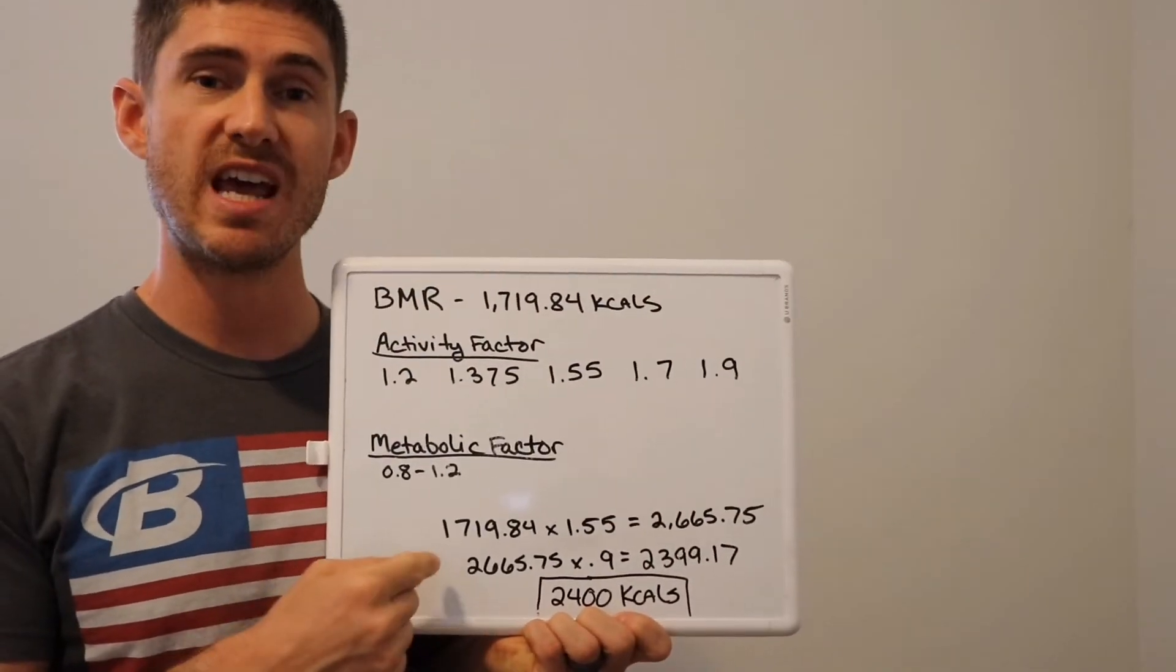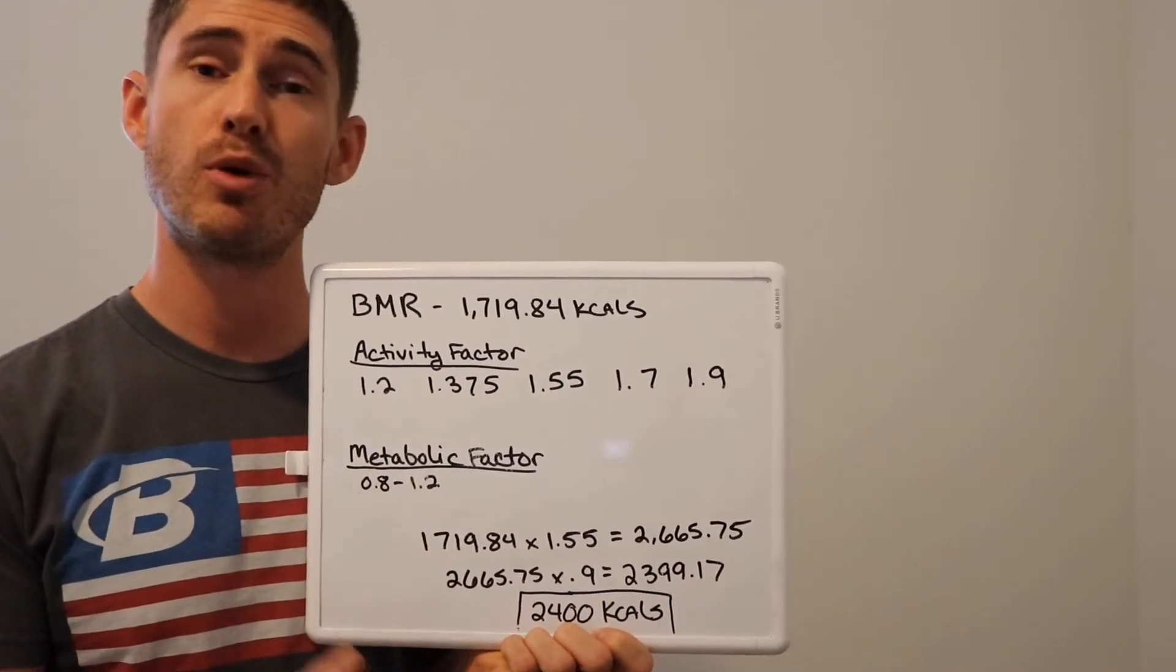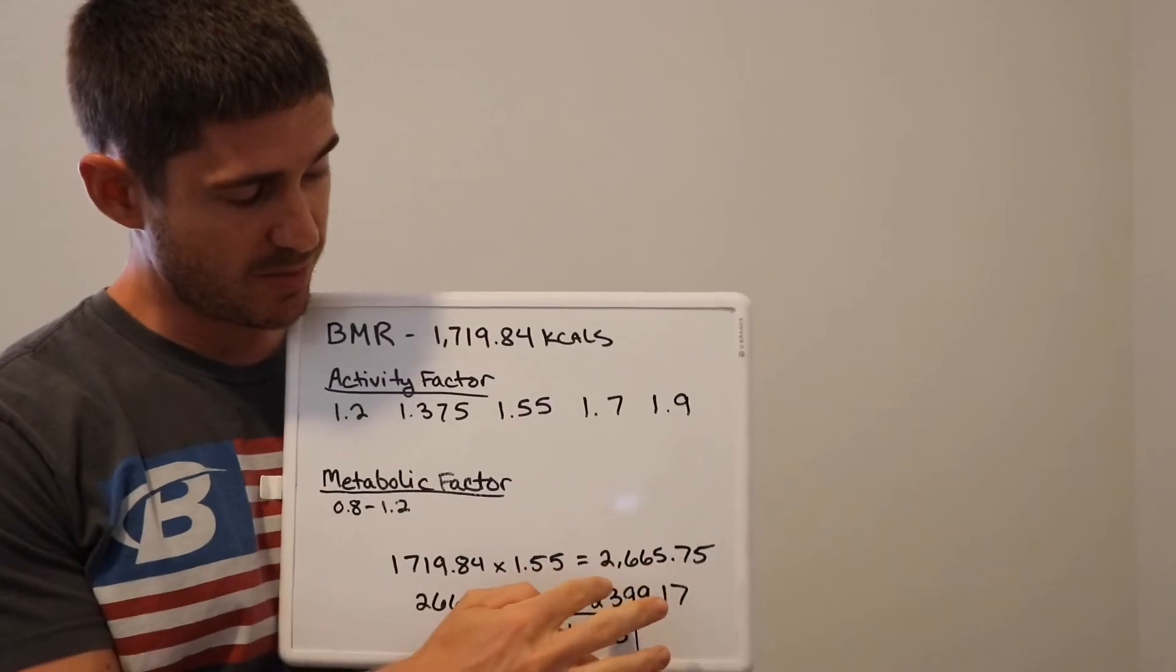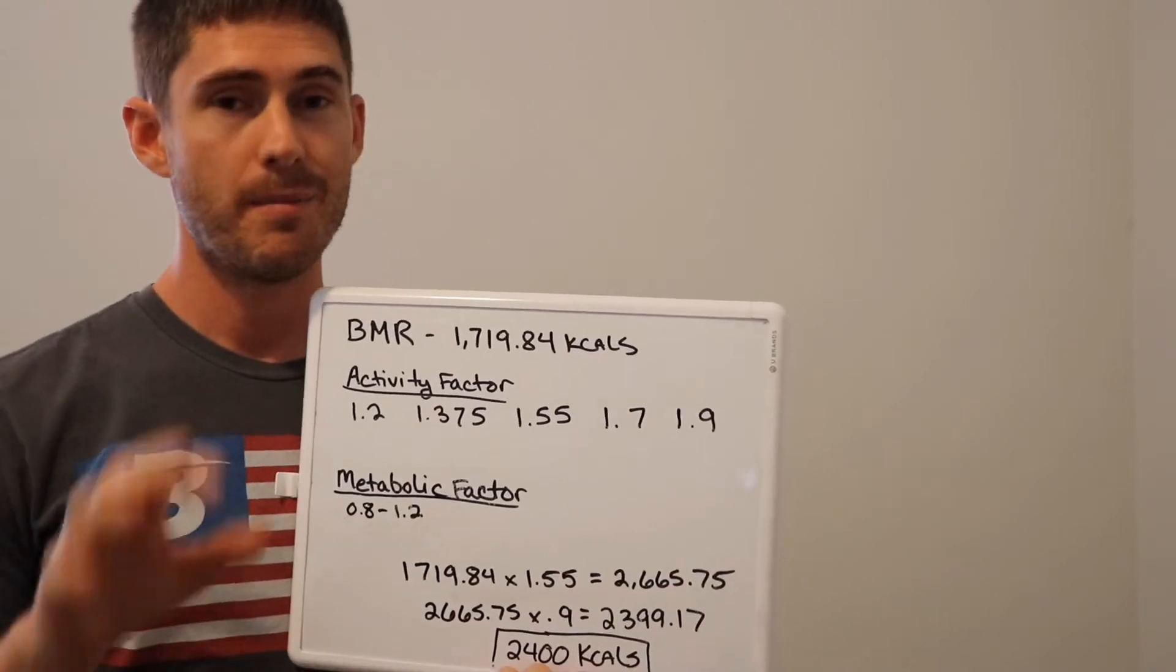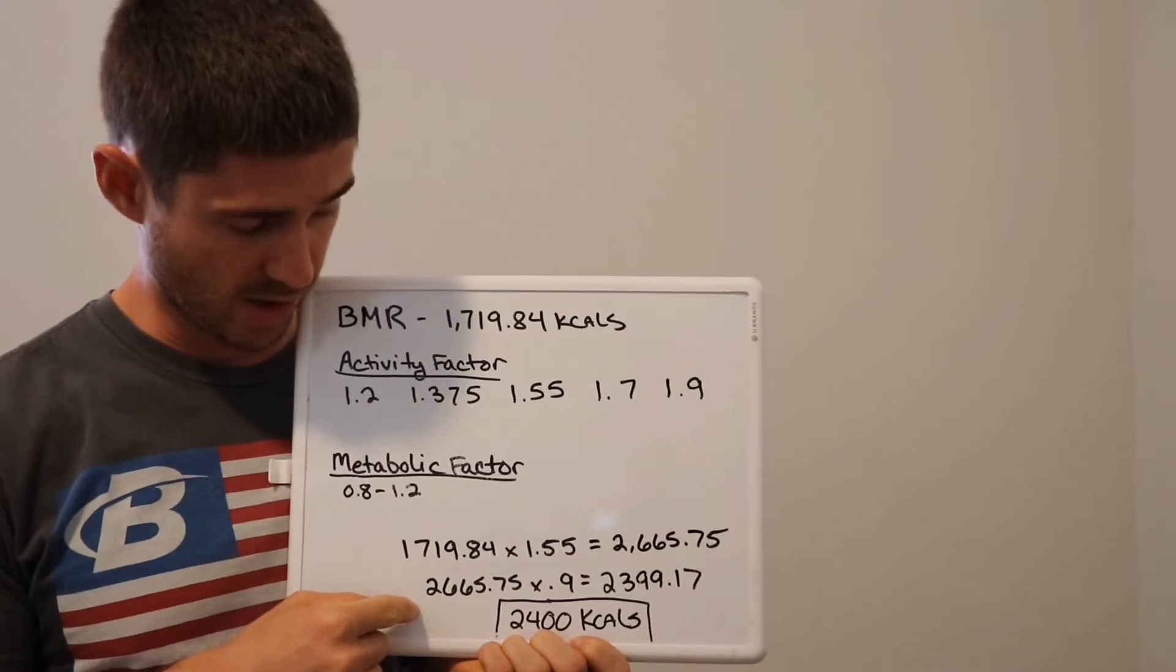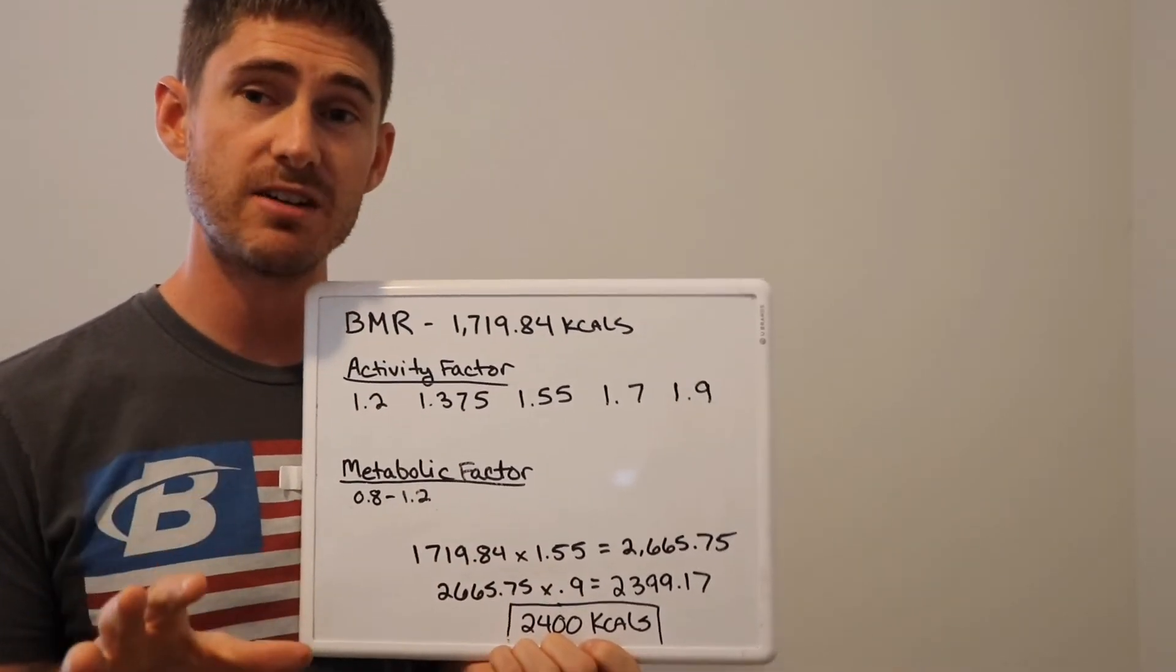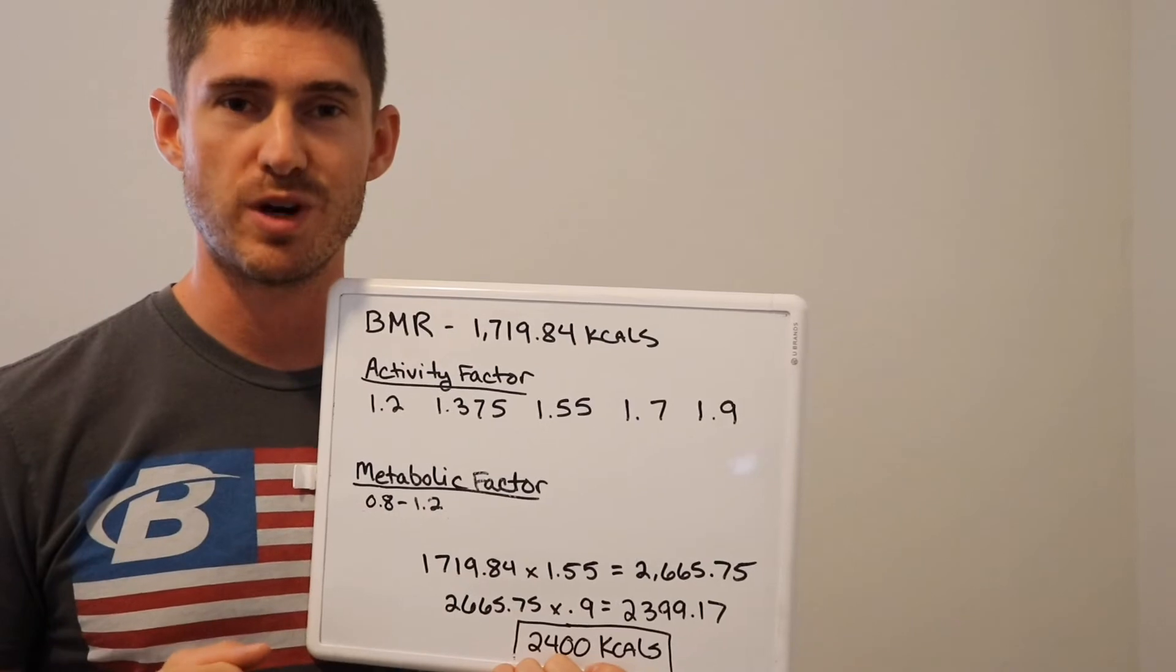What we do then is we take the BMR that you found out for yourself. For my case, it's 1,719.84 calories. I'm going to multiply that by my activity factor 1.55. That's going to get me 2,665.75 calories. But that's not where we stop. We have to take that 2,665 calories and multiply that by your metabolic factor. For me, it's 0.9. What that comes out to as my maintenance calories would be 2,399.17, basically 2,400.